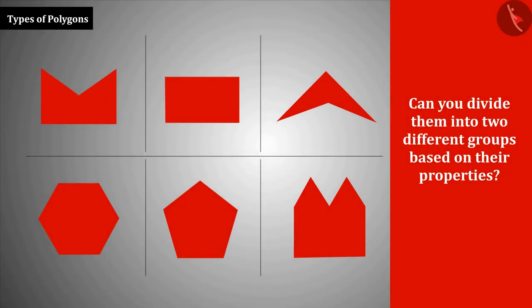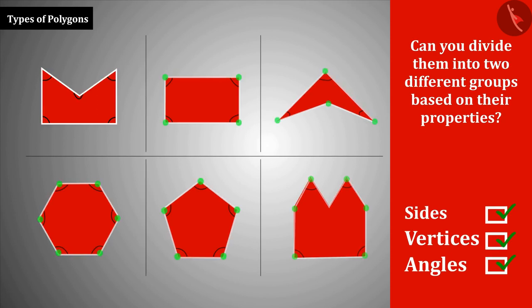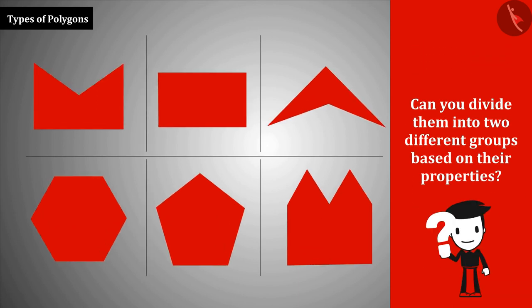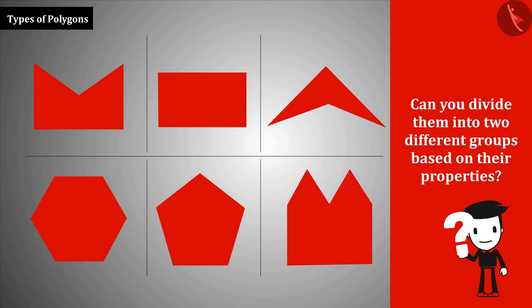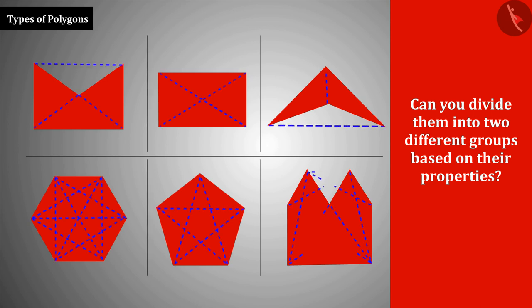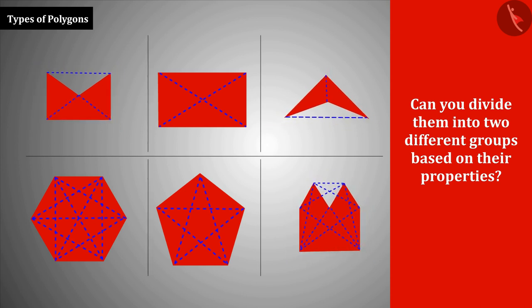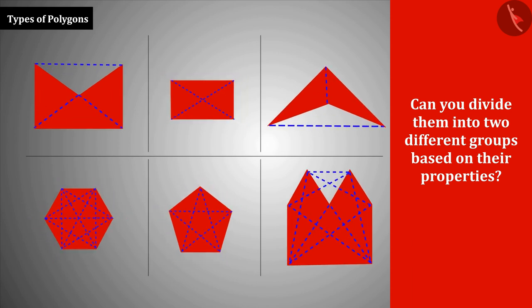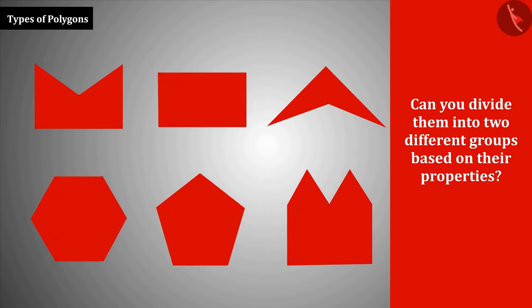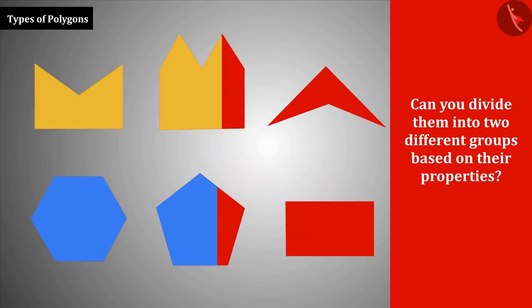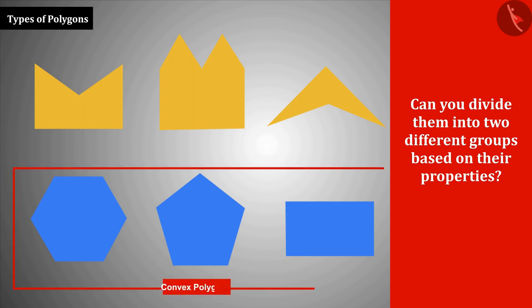We know that a polygon is made up of sides, vertices, and angles. Since all these polygons share the same properties, let's make their diagonals to find a basis for separating them. You can see that the diagonals of some polygons are confined to their interior, while for other polygons, some part of the diagonals lies in the exterior. In this way, we can categorize polygons into two groups: convex and concave.